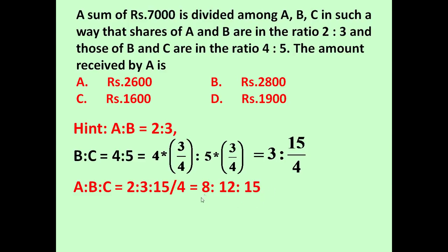If there are 35 rupees, A will get 8 rupees, B will get 12 rupees, and C will get 15 rupees. So the question is the amount received by A - A will get 8 out of 35.